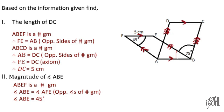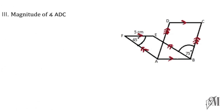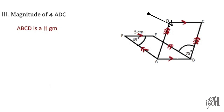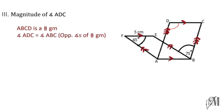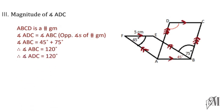Moving on, we have to find angle ADC. Since ABCD is a parallelogram, we apply the same theory that opposite angles are equal. Angle ABC is equal to 45 plus 75 degrees, that is 120 degrees. Since angle ABC equals angle ADC, therefore angle ADC is also 120 degrees.